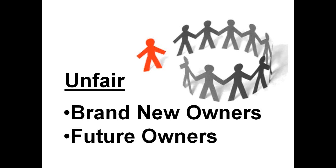Special assessments force the unfortunate owners at the time of the expense to pay for more than their fair share of the cost of deterioration — often deterioration that occurred long before they owned a unit in the association. If you're under-reserving now, you're forcing your fair share of the cost of deterioration onto future owners. And if a special assessment can't be passed, this forces an over-reliance on emergency bank loans — which layers debt on top of what's already proven to be an inadequate income stream, making the unfortunate owners at the end of the project's service life subsidize all those prior owners who underpaid.